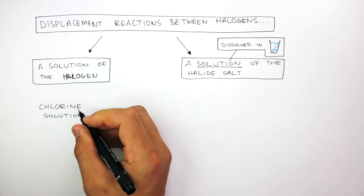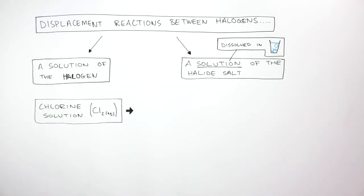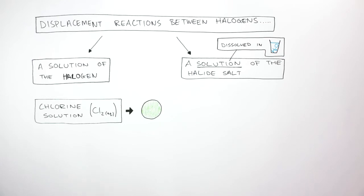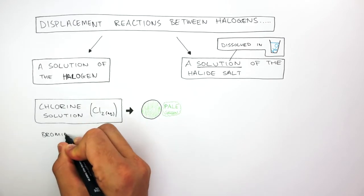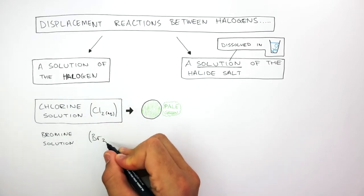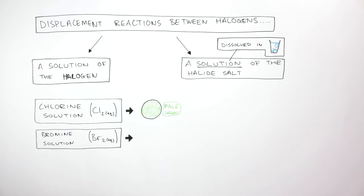Chlorine solution (Cl2 aqueous) has a pale green color. You can recognize chlorine solution by the pale green color. Bromine solution (Br2 aqueous) has a yellow color. You can recognize bromine solution by the yellow color.